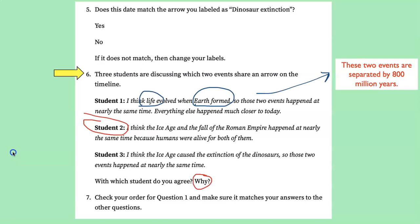So why is that? Earth forming and life evolving are separated by about 800 million years. And the Ice Age and the extinction of the dinosaur are separated by about 65 million years. Now the Ice Age and the fall of Roman Empire all happened within the past million years. So you want to make sure your answers are correct.